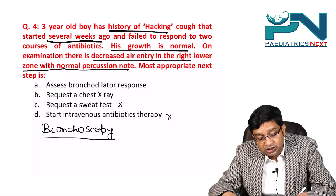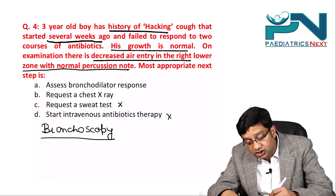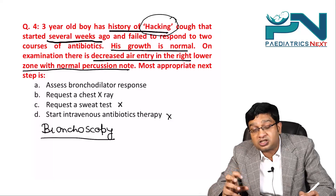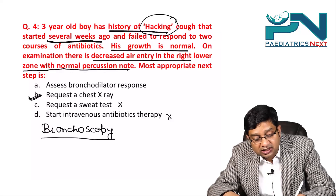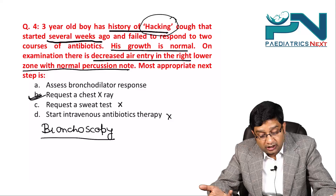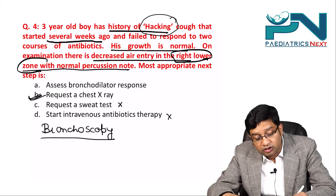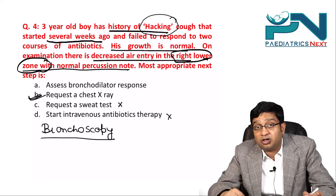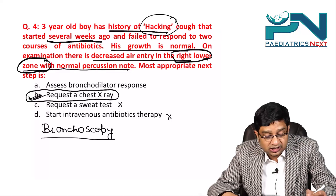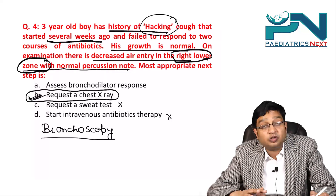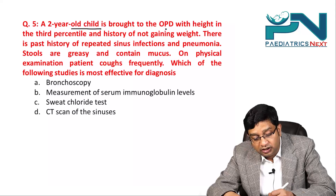Asthma does not typically cause a hacking cough or localized right lower zone limitation. A hacking cough indicates obstruction. The most appropriate next step given the options is to request a chest X-ray, where a foreign body may be found. Ideally, bronchoscopy should be performed, but the best available answer is the chest X-ray.